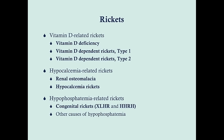Hypocalcemia-related rickets is due to low calcium, either from poor intake or from a condition that wastes too much calcium — renal osteomalacia — in which you have chronic kidney disease. Finally, hypophosphatemia-related rickets is typically congenital in origin. It's very difficult to not get enough phosphate in the diet because it's everywhere. People with kidney disease actually tend to have high phosphate levels, which is why severe kidney disease requires dialysis.